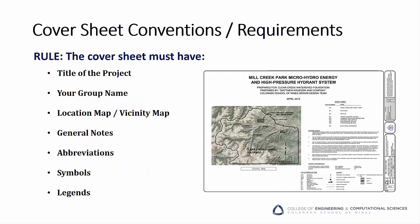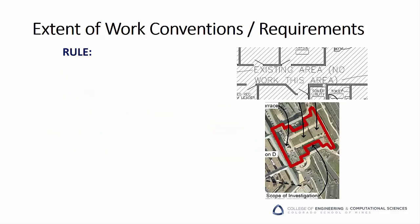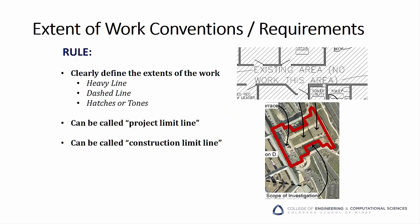Lead into your drawing set with a well-conceived cover sheet. The cover sheet should contain the title of your project, your group name, the location map or vicinity map for your project, general notes, abbreviations, symbols, and legends as required. As you put together your drawing package, remember to clearly define the extent of work to be completed in the appropriate views. This is called the project or construction limit line. Capturing and communicating where the project limit line is, is a critical step in controlling the project's scope.